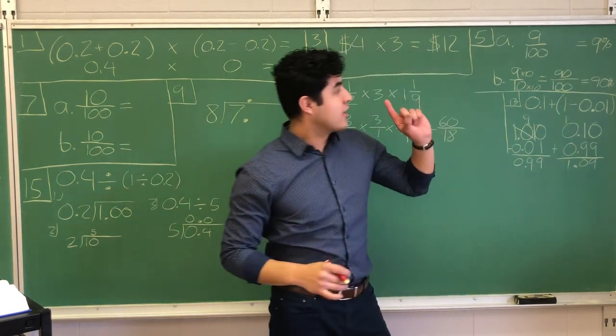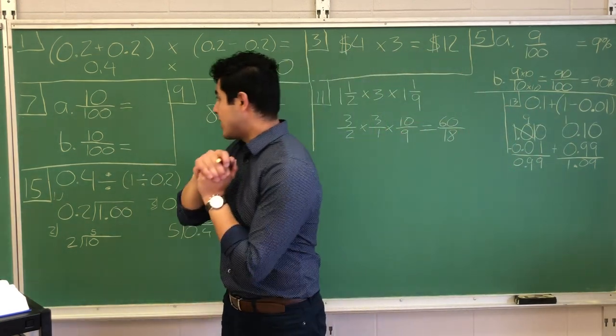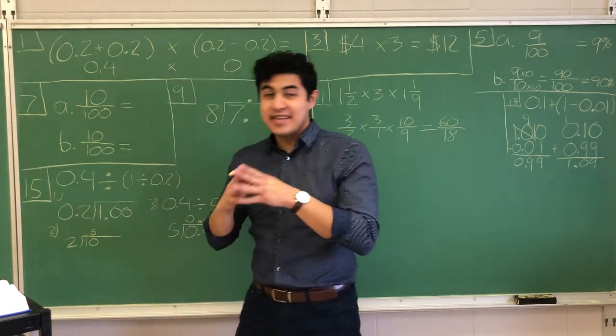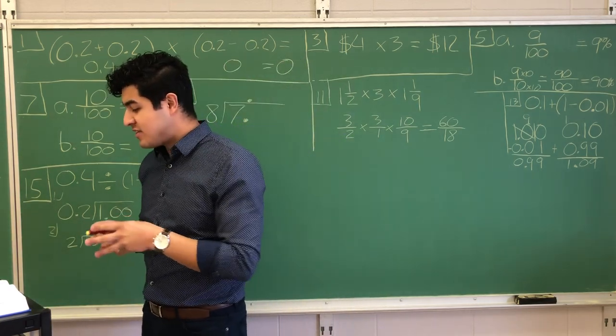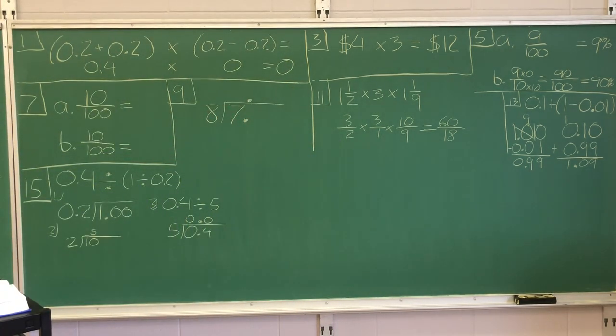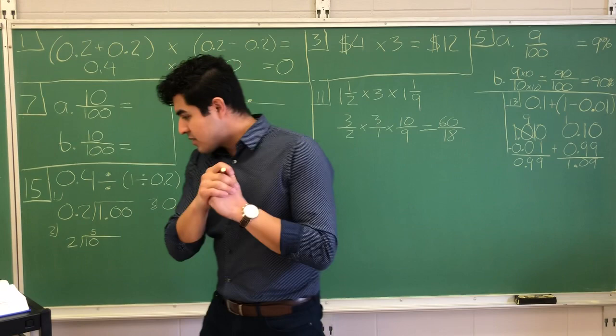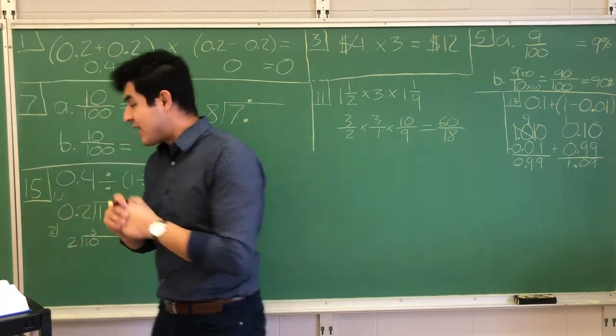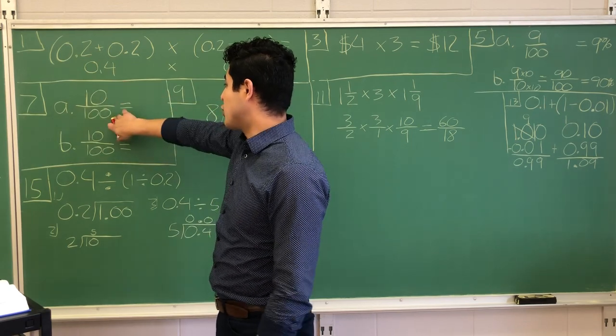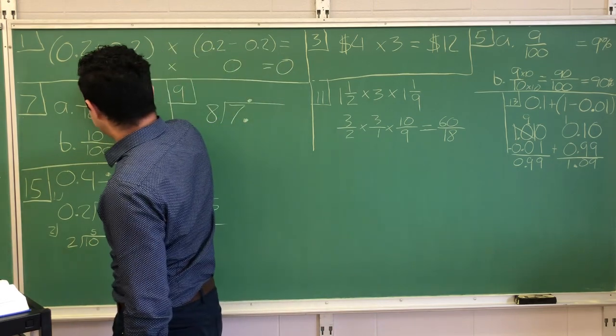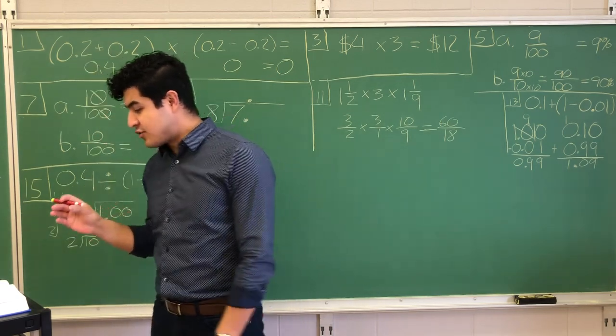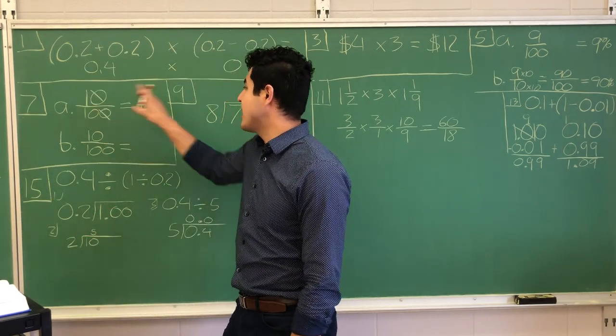So letter A is 9%, letter B is 90%. All right, on to problem number seven. A century is 100 years. A decade is 10 years. What fraction of a century is a decade? So I've written my fraction out. 10, the decade, and 100, the century. So I'm just going to reduce across these out. So I've got 1 over 10. So letter A is 1/10.